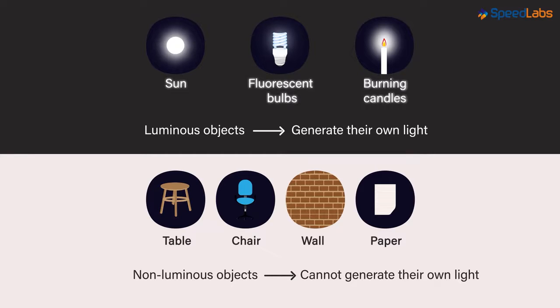But I just told you that we see objects around us because of the light coming from them. And if objects like these cannot generate light, then how come we are able to see them?